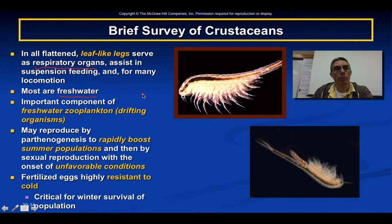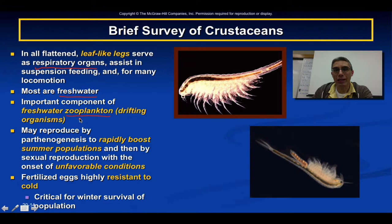Branchiopods are a very important part of freshwater zooplankton. Plankton literally means a very tiny animal that drifts throughout the environment, and 'zoo' refers to animal, since there are also plant-based plankton. The reproductive strategies of branchiopods are actually very interesting and similar to what you would see in rotifers.